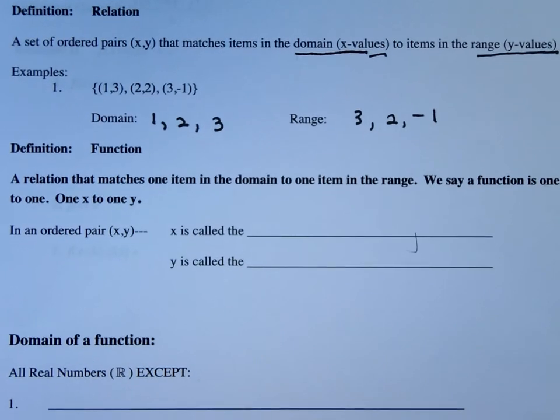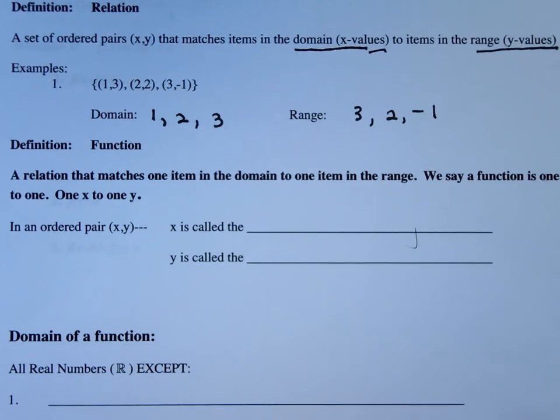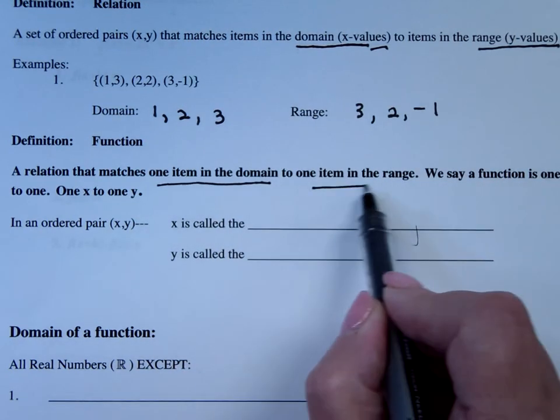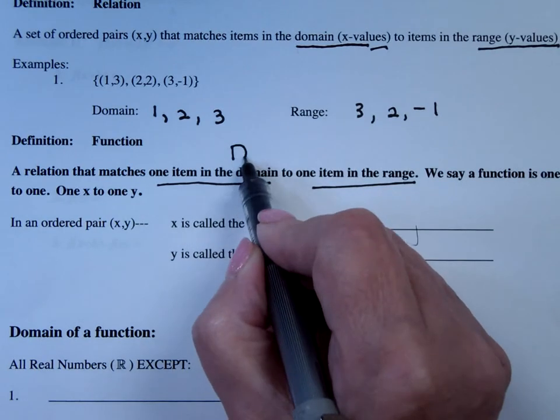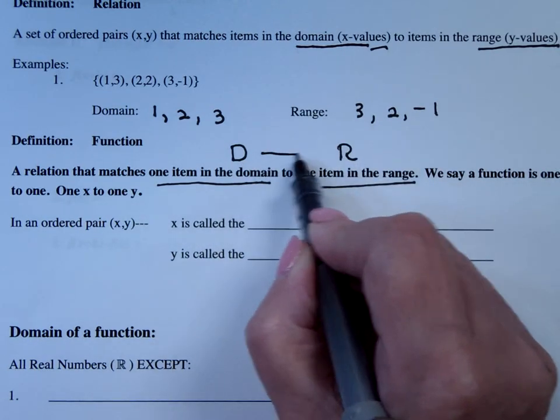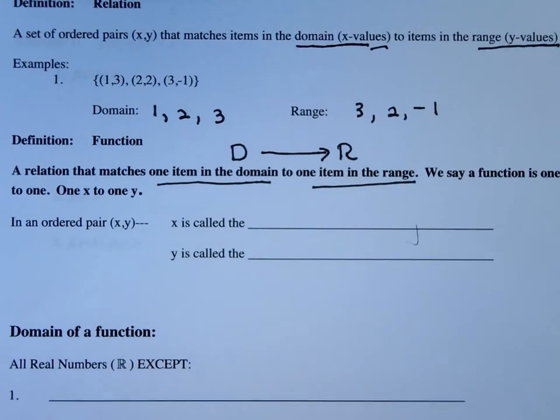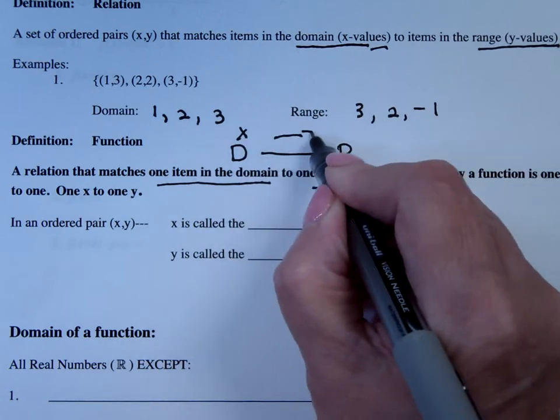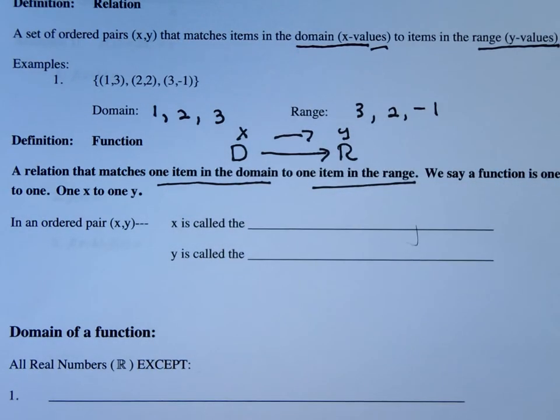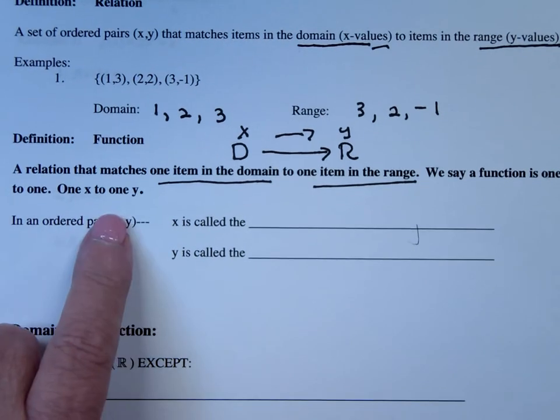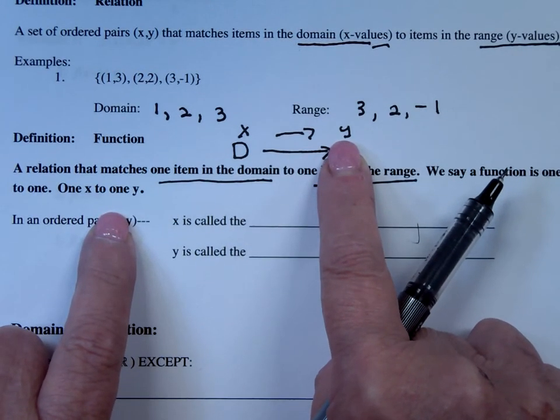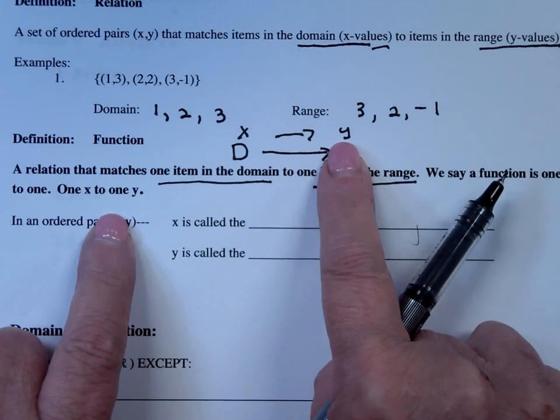A function, which is what we're going to be dealing with primarily, is a relation that matches one item in the domain to one item in the range. So you're going from domain to range, an x value to a y value. We say a function is one to one, one x to one y. We're not saying one y to one x, it's only one directional, only x to y.